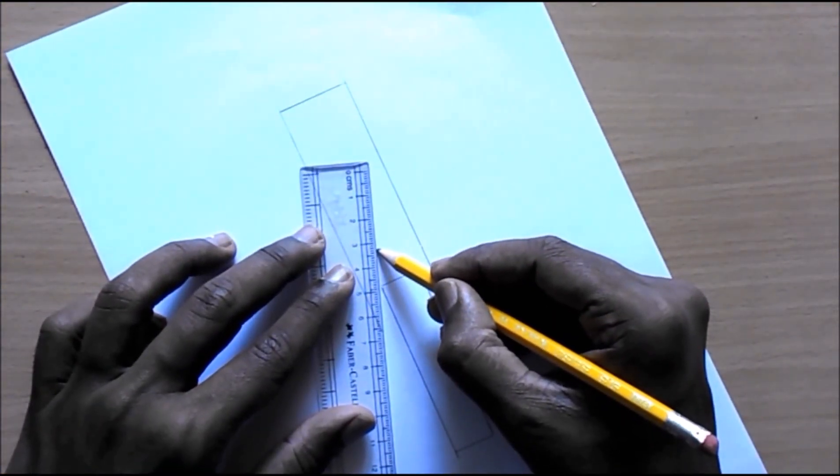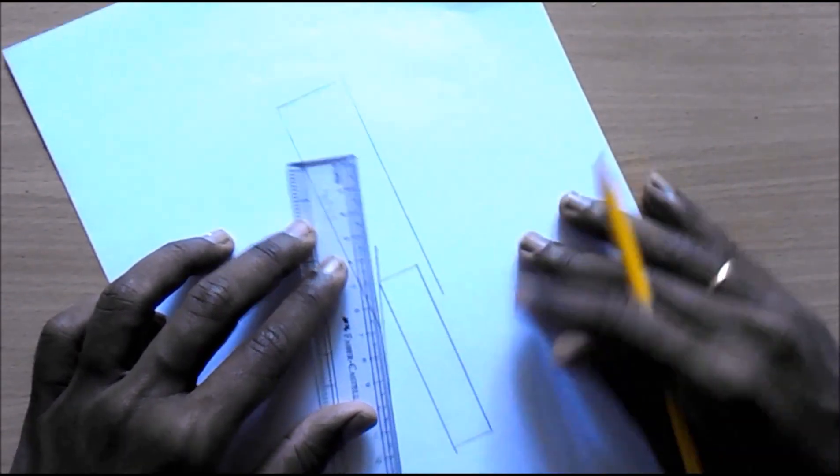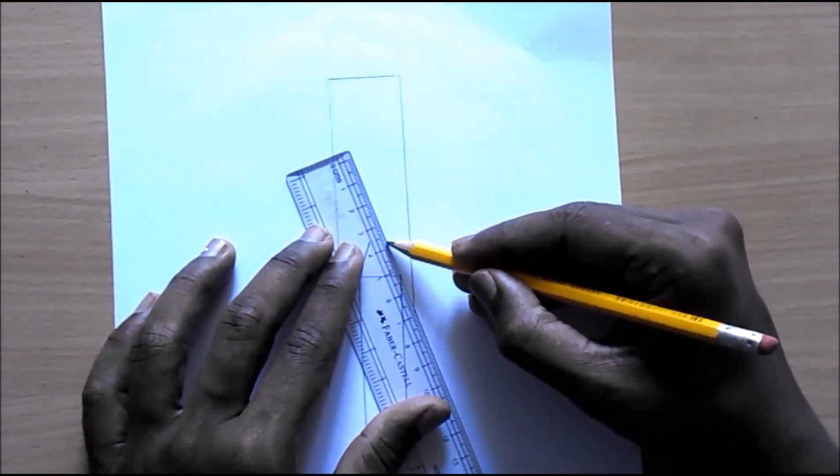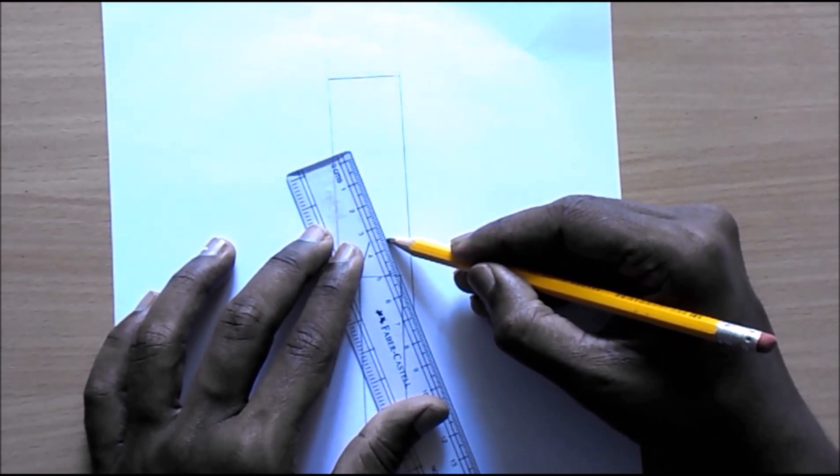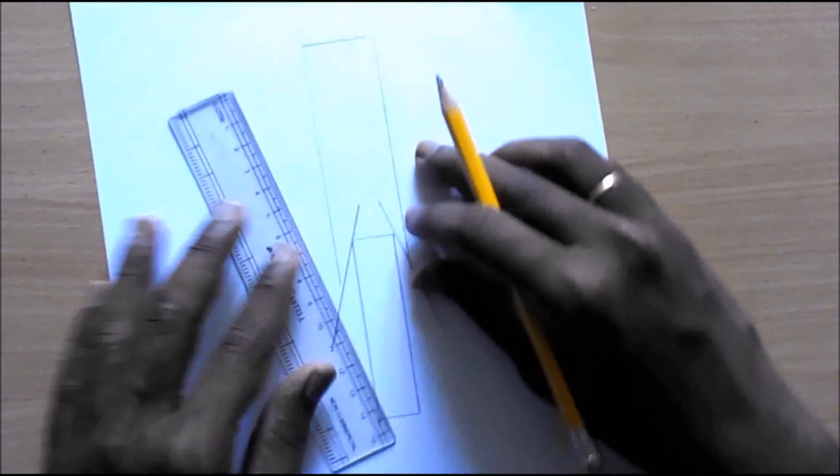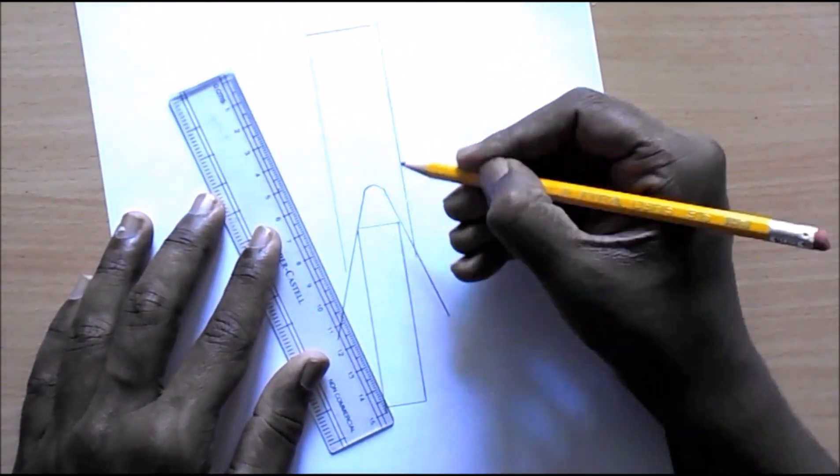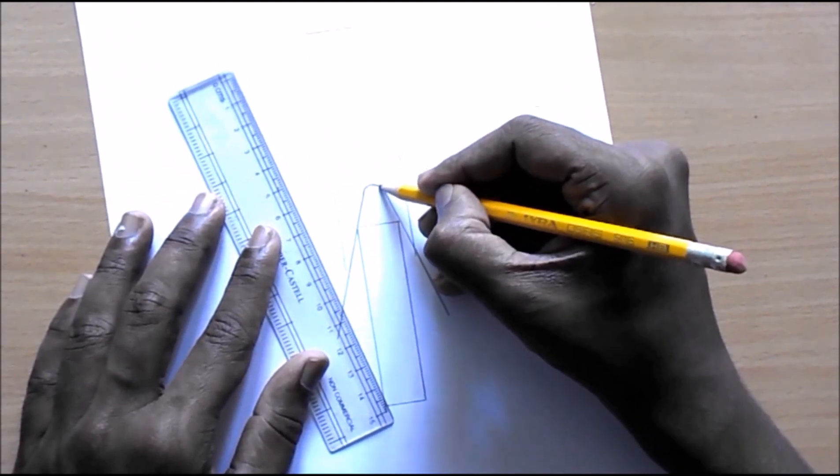Now, slant the scale and draw a straight line. After doing this, just attach both of the lines with a curved line.